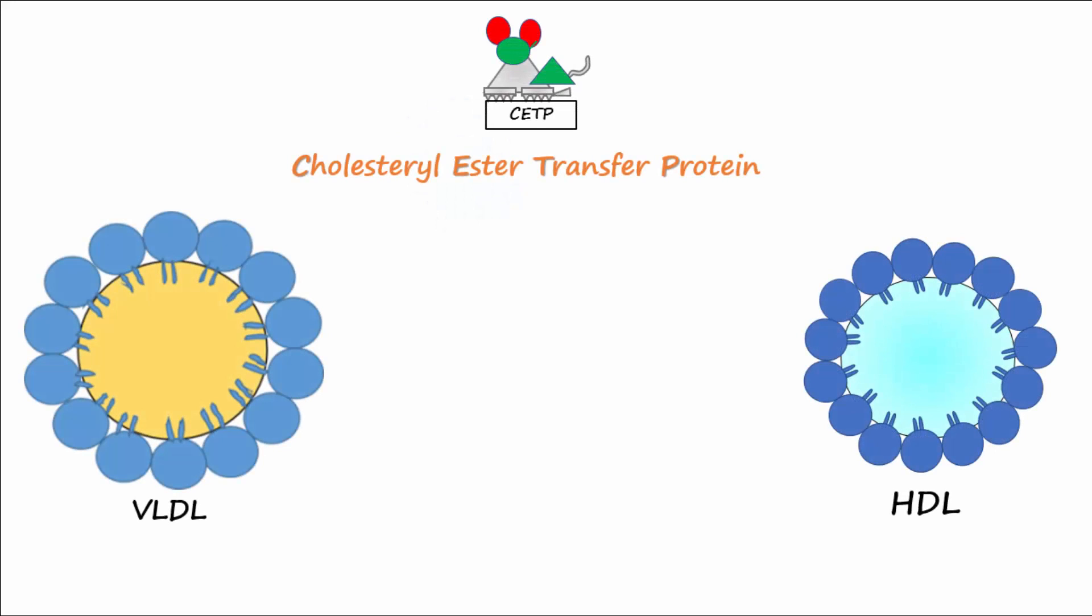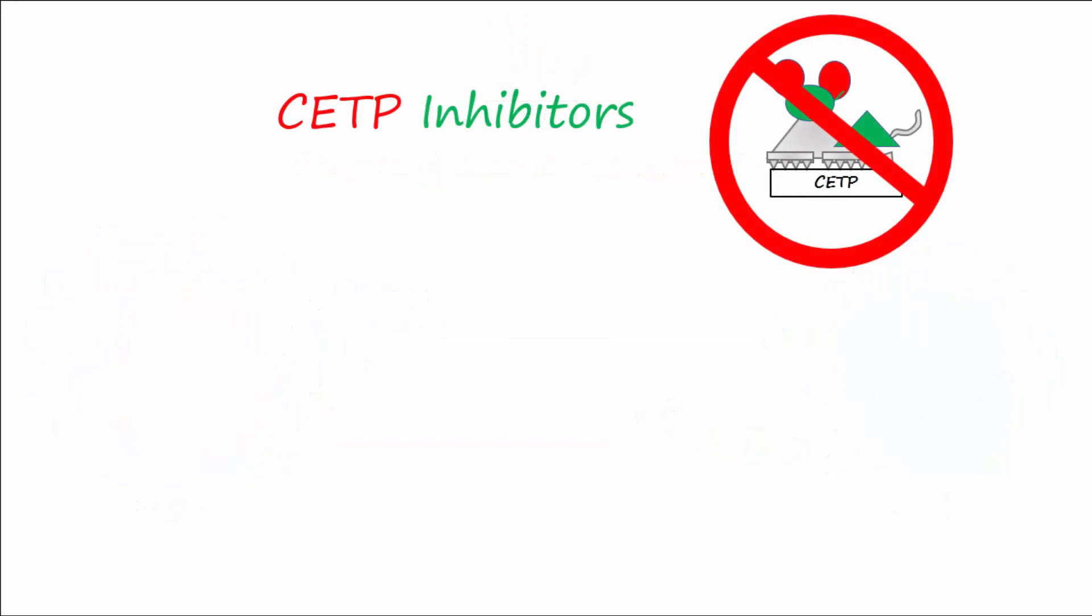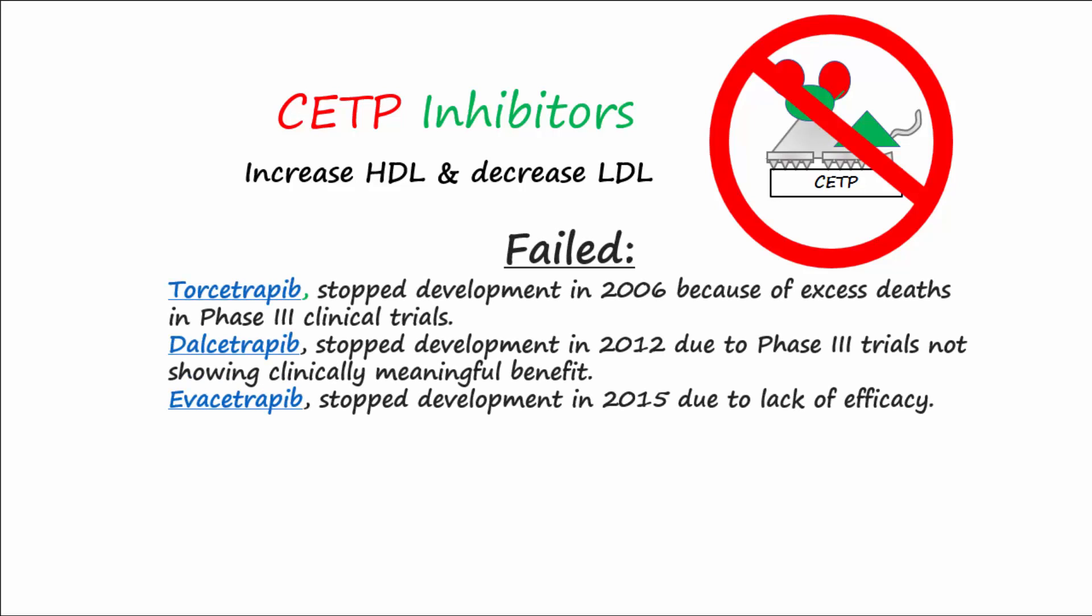CETP or cholesterol ester transfer protein allows HDL and VLDL to swap triglycerides and cholesterol esters. Inhibitors of CETP have been developed and lead to increased HDL levels and lower LDL levels. However, several medications in this class have failed to produce clinically positive cardiovascular outcomes.